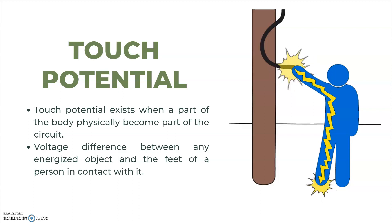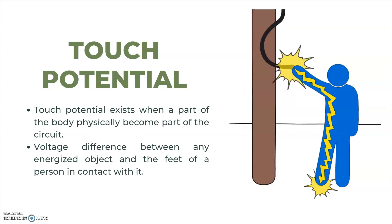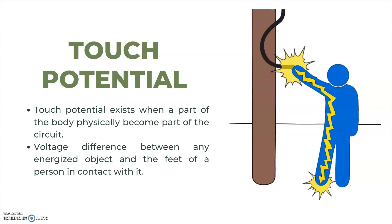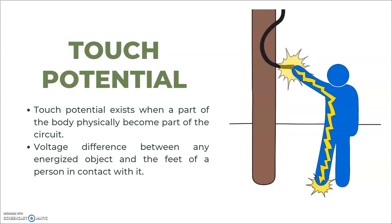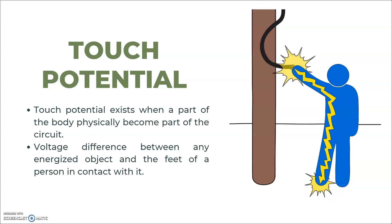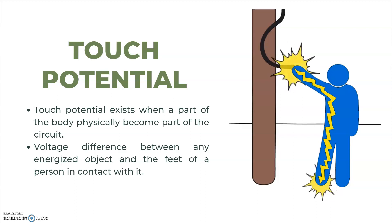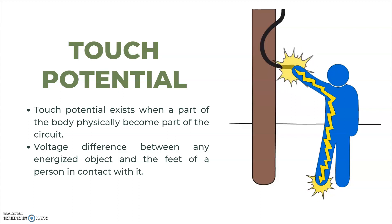Touch potential exists when a part of the body physically becomes part of a circuit. This could be as simple as touching a power line or from touching an object that is in contact with a power line. The key thing to remember about touch potential is that you do not have to see the hazard for it to exist.